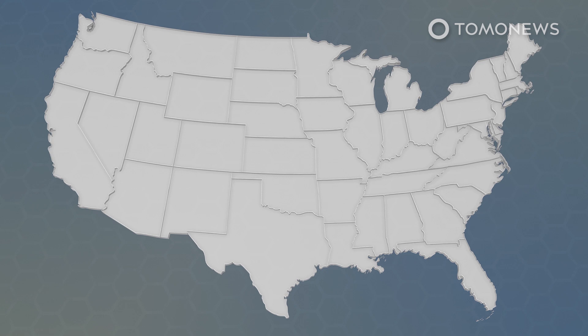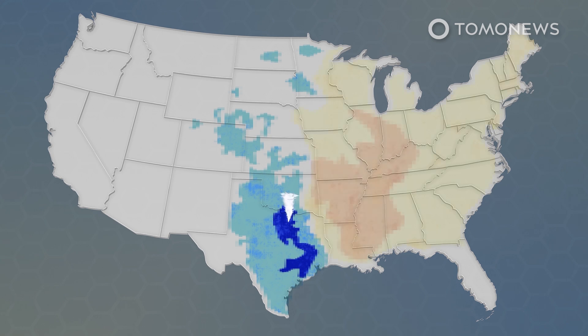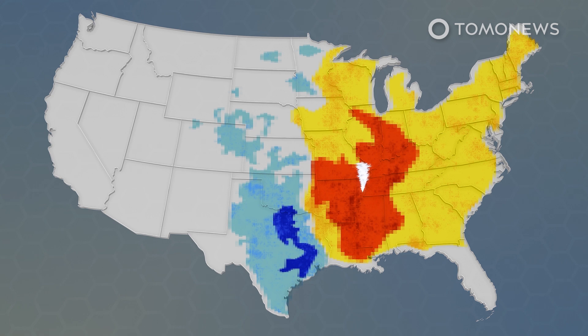Over the past four decades, tornado frequency has been decreasing in parts of the central and southern Great Plains known as Tornado Alley, while increasing in more heavily populated states east of the Mississippi River.